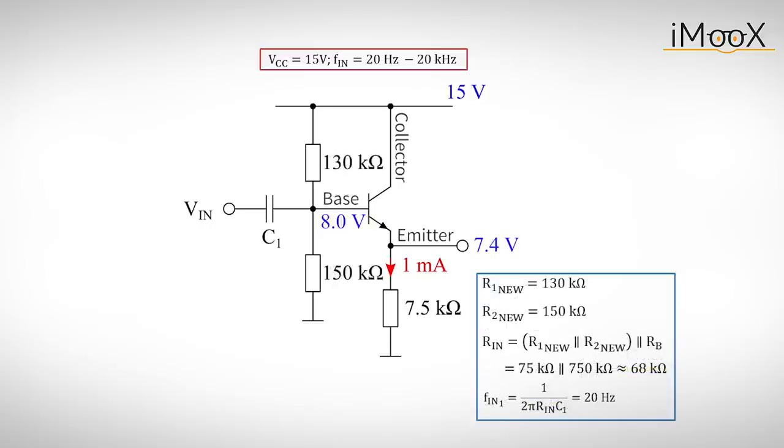As a last step, we choose C1 to form a high-pass filter for every AC signal with frequencies above 20 Hz. The input impedance we now have to deal with is the impedance looking from the input into the voltage divider. It is about 75k in parallel to the input impedance of the follower, which is about 750k.